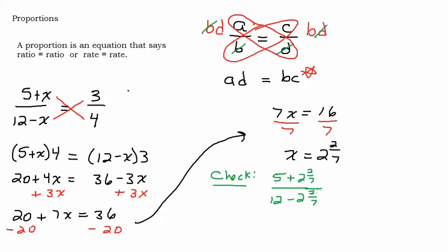Well, let's give it a try. All right. So let's see. 5 plus 2 and 2 7ths would be 7 and 2 7ths. I'm going to run out of room here, I bet. Oh, I got room up there. Let's go up here. Hopefully this isn't too messy. Okay. So we have 7 and 2 7ths over, let's see, 12 take away 2 would be 10 and take away 2 more 7ths would be 9 and 5 7ths.